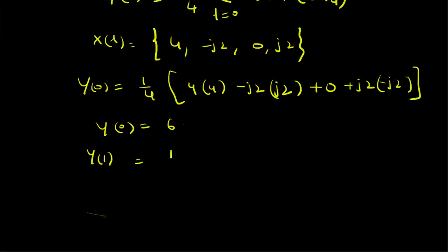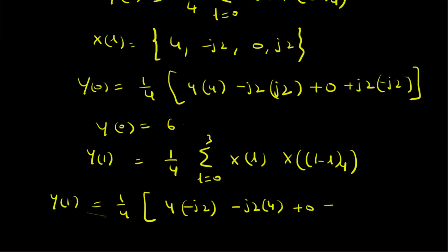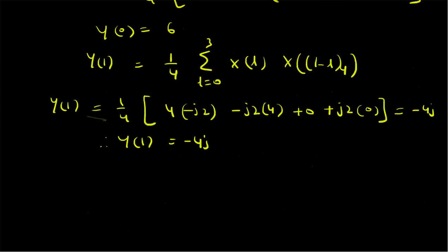For k = 1, Y(1) = (1/4) times the summation from l = 0 to 3 of X(l) times X((1 − l) mod 4). The terms are: l = 0 gives X(0) × X(1) = 4 × (−j2) = −8j; l = 1 gives X(1) × X(0) = (−j2) × 4 = −8j; l = 2 gives 0; l = 3 gives X(3) × X(−2 mod 4) = j2 × 0 = 0. This simplifies to −16j, so Y(1) = −16j/4 = −4j.